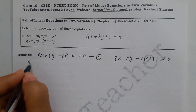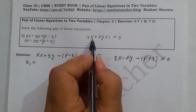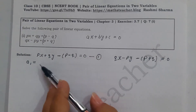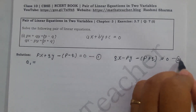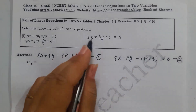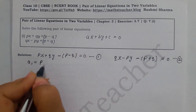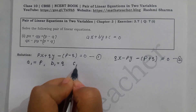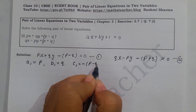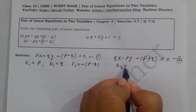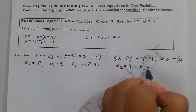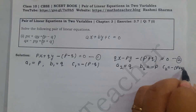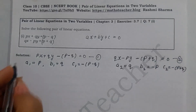Now we identify the coefficients. For equation 1: a1 is the coefficient of x, so a1 equals p; b1 is the coefficient of y, so b1 equals q; and c1 equals minus(p minus q). For equation 2: a2 equals q, b2 equals minus p, and c2 equals minus(p plus q).